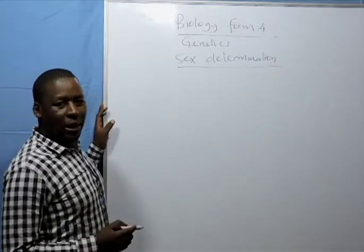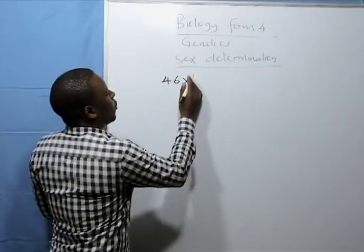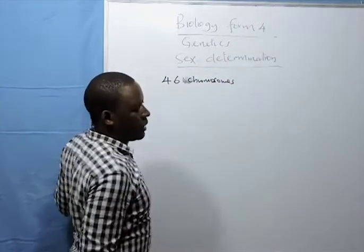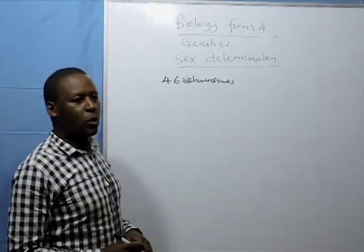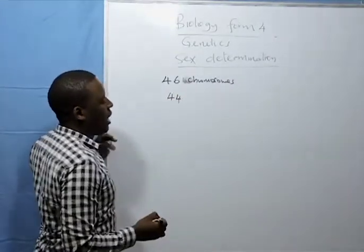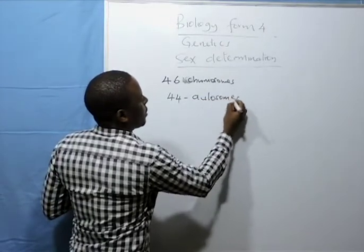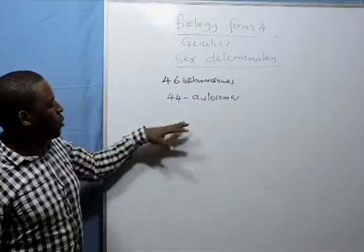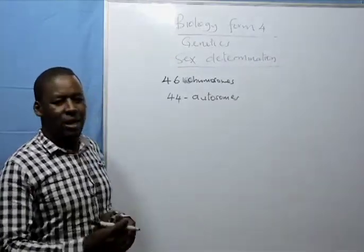You will recall in a somatic human cell there are 46 chromosomes. In a normal human cell, there are 46 chromosomes. Out of these 46, 44 are known as autosomes. Autosomes carry genes that determine other characteristics.